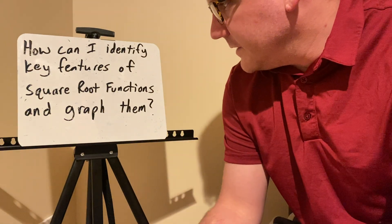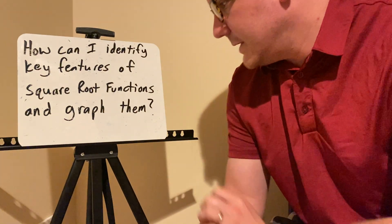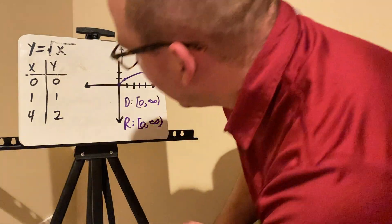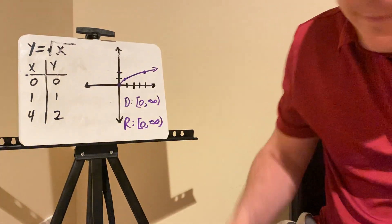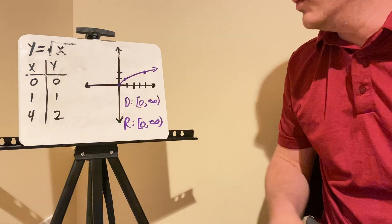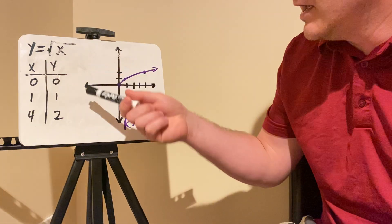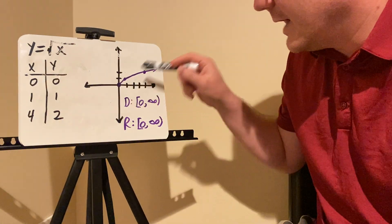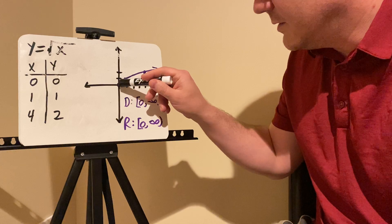How can I identify key features of square root functions and graph them? We're going to look at a square root function where we have y equals the square root of x, or f of x equals the square root of x. In this case, in order for it to be a function, we're only graphing the positive square roots of this.